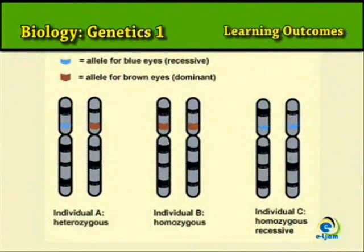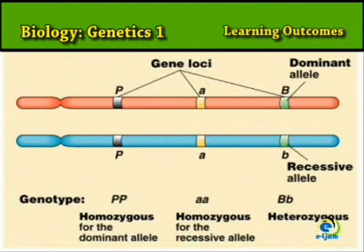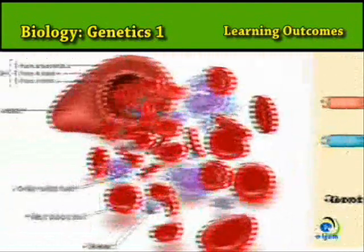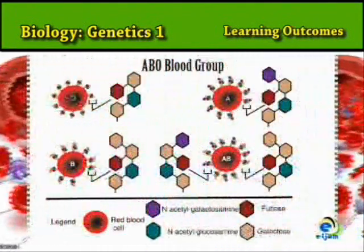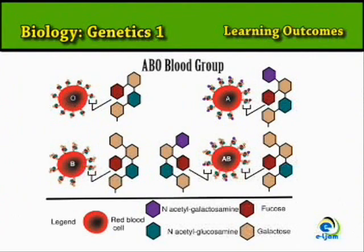Multiple Alleles: So far, we have examined situations in which a gene may only have two alleles. Sometimes, however, there may be more than two alleles that can occur at a given locus. Of course, in any one individual, only two alleles can be present. A clear example of such multiple alleles is provided by the alleles controlling the ABO blood group system in humans.